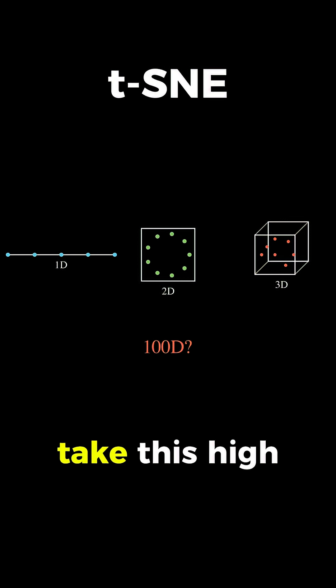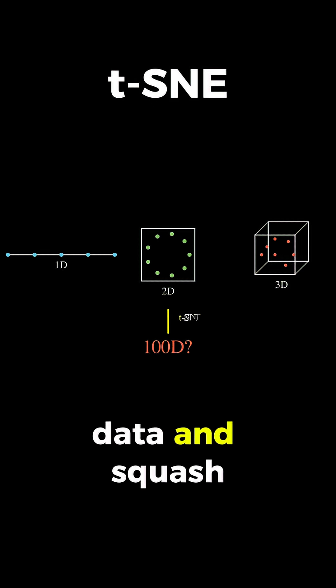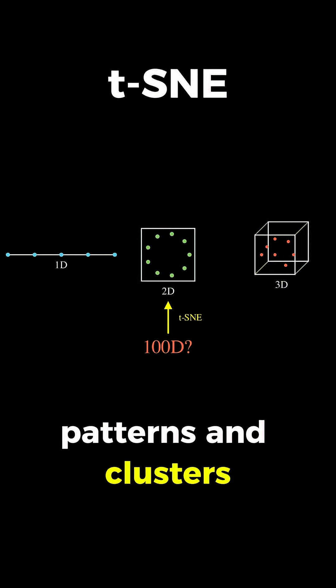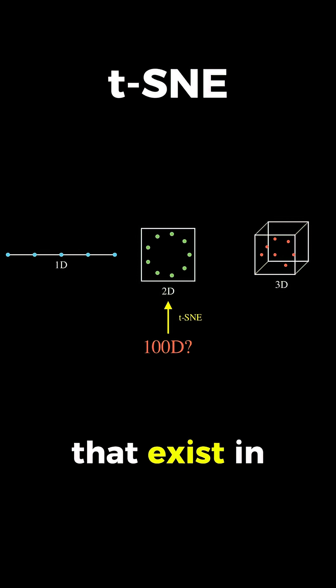What we really want is to take this high-dimensional data and squash it down to two dimensions so we can plot it on a screen and actually see patterns, clusters, and relationships that exist in the data.